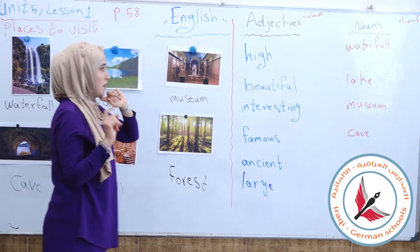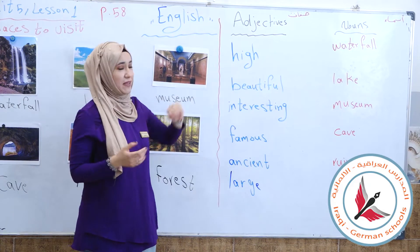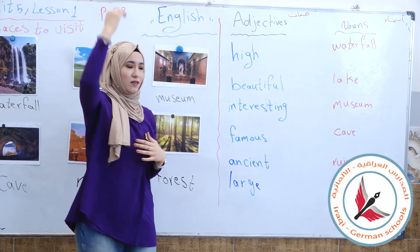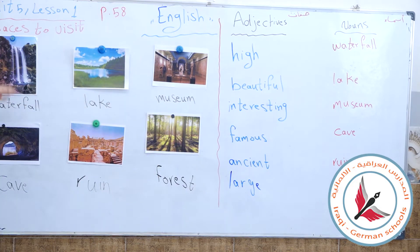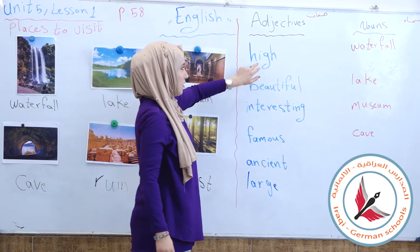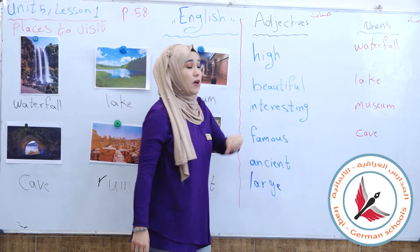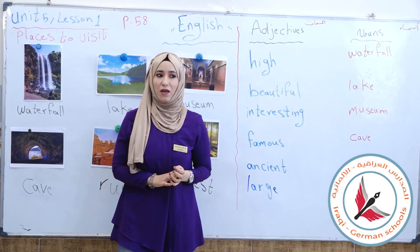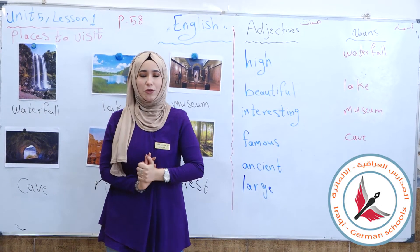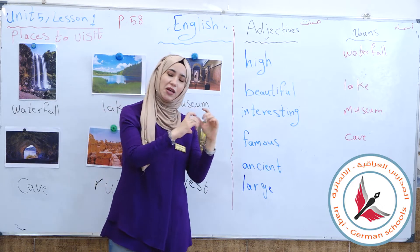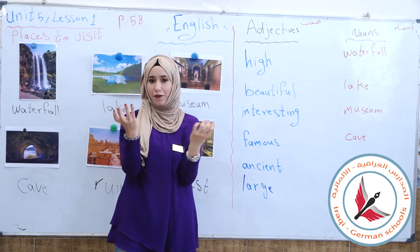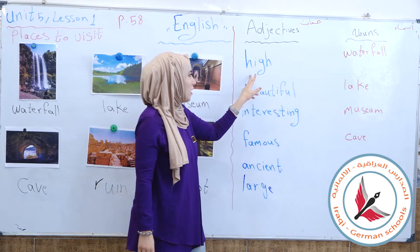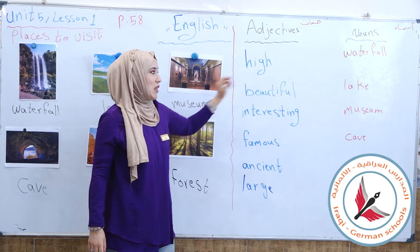The first adjective picture: high. We explained it before. How is the waterfall? It's high. An important note: the adjective always comes before the noun. In English, the adjective comes first, then the noun. So we say: high waterfall — شلال عالي.